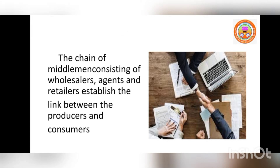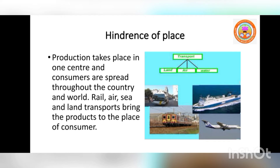The second hindrance is the Hindrance of Place. Production takes place in one centre while consumers are spread throughout the country and world. Road, air, sea, and land transport bring the products to the place of consumers. Manufacturers produce goods in one place, but those products are needed around the world, so they must be distributed through various means of transportation. Transportation eliminates the hindrance of place.